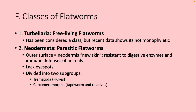Classes of flatworms: Turbellaria — our free-living flatworms — and then Neodermata, our parasitic flatworms. Neodermata is subdivided into two subgroups: the Trematoda, which are the flukes, and the Cercomeromorpha, which are your tapeworms and relatives. The free-living ones are carnivores and predators. The parasitic ones don't have their own digestive system — they are resistant to the digestive enzymes and immune defenses of the animals they parasitize.